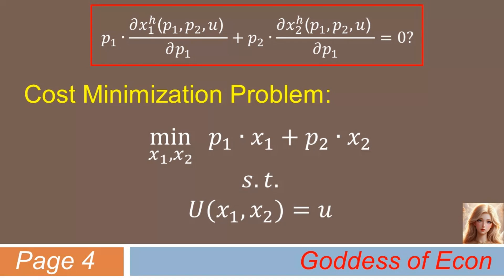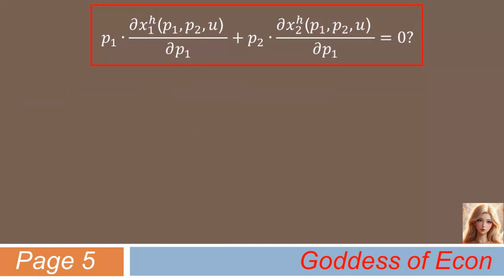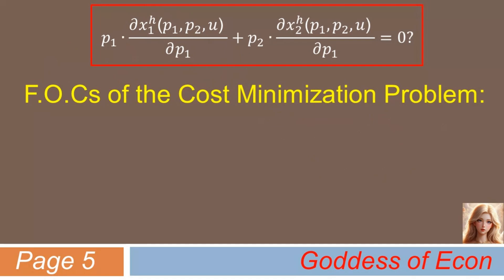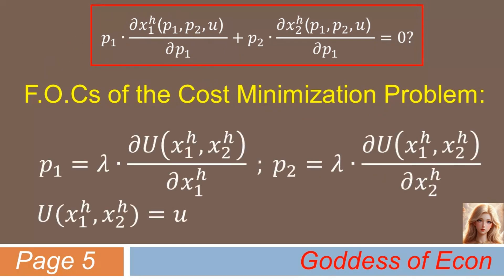Anyway, proving Shepard's lemma requires the use of the first order conditions of the aforementioned cost minimization problem. So, here I show you what they are, one by one. The first FOC condition is P1 equals lambda times partial derivative of U with respect to the Hicksian demand for good one. The second one is P2 equals lambda times partial derivative of U with respect to the Hicksian demand for good two. The last one is the constraint of the minimization problem itself, which is U of XH1 and XH2 equals small u.